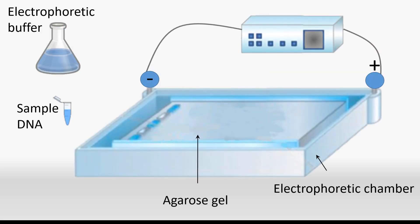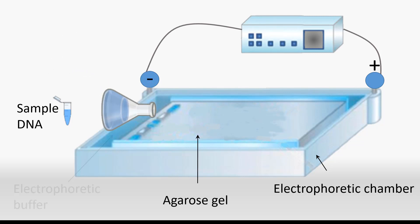The agarose gel is added to an electrophoresis chamber, which is a plastic reservoir with an electrode on either end connected to a power supply. More of the electrophoretic buffer is added to fill the chamber and cover the gel.